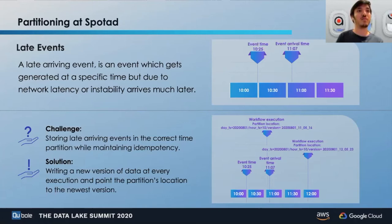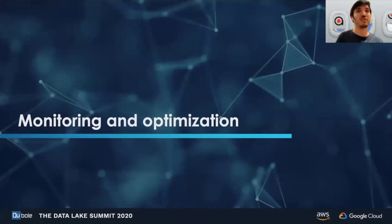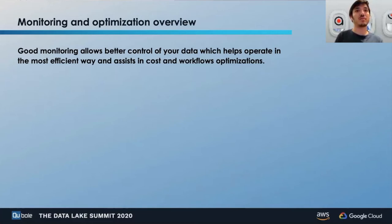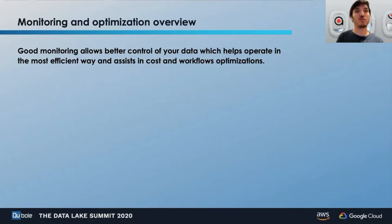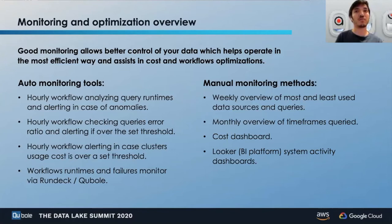Our next topic is monitoring and optimization. Good monitoring allows better control of your data workflows and total cost of ownership optimization. At SpotEd, we use various monitoring tools including automatic monitors for query runtimes, error ratio, and usage cost. Our manual monitoring methods include a weekly overview for our most used data sources, a monthly overview for the timeframes queried, and additional monitoring methods accessible via Looker — our BI platform — which has a collection of dashboards titled System Activity Dashboards.